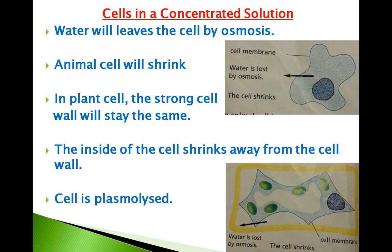What would happen if you put a cell in a concentrated solution? For example, if you put a june plum in a bag with salt, you are placing the june plum cells in a concentrated solution. After a few minutes the bag becomes watery because water leaves the cell of the june plum, making the concentrated salt more dilute. Water will leave the cell by osmosis, and animal cells will shrink.